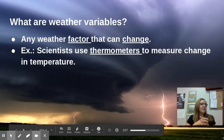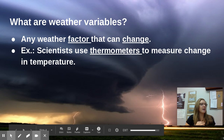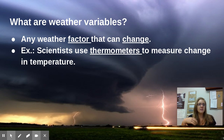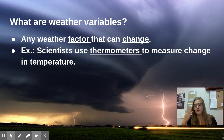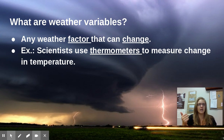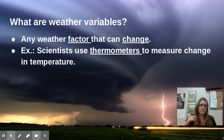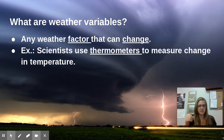So what are weather variables? Weather variables are any weather factor that can change. This is what you're typically going to measure or discuss when talking about weather forecasts and what you're experiencing outside. For example, scientists use thermometers to measure the change in temperature — that would be a weather variable, how hot or cold it is outside.